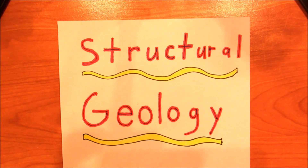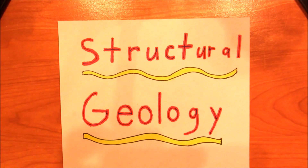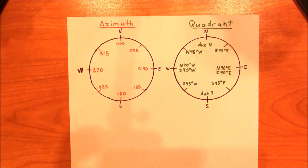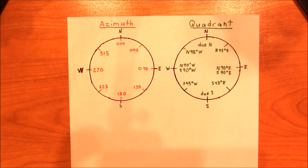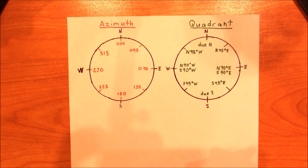So let's go ahead and get started. In this particular episode, I'd like to talk about the orientation of lines and planes in space. Now if you've ever had a linear algebra course or a calculus 3 course, you're probably already familiar with trying to represent lines and planes in space. In geology, however, we tend to do things a bit differently.